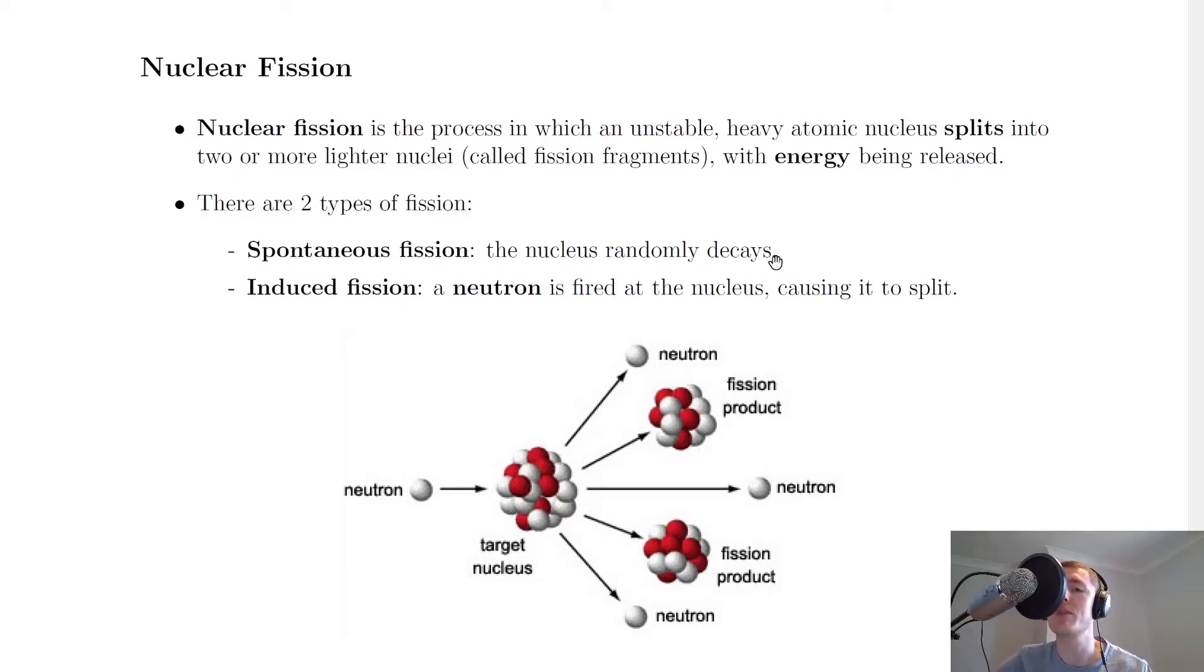Whereas induced fission, if you induce something to happen then you cause it to happen, so induced fission is when a neutron is fired at the nucleus causing it to split. So one is random and one is caused to happen.